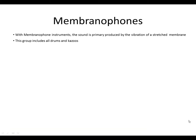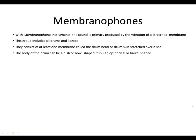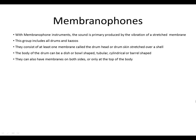This group includes all drums and kazoos. They consist of at least one membrane called the drum head or drum skin, stretched over a shell. The body of the drum can be dish or bowl shaped, tubular, cylindrical, or barrel shaped. They can also have membranes on both sides or only at the top of the body. It can be struck with hands or with drumsticks.